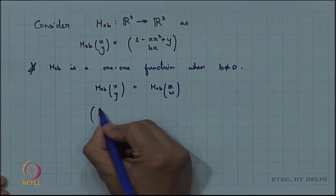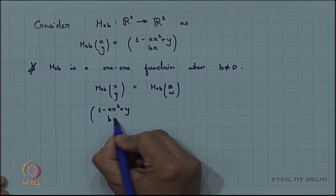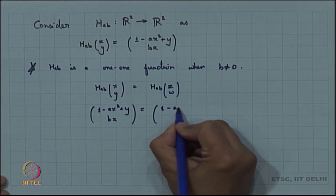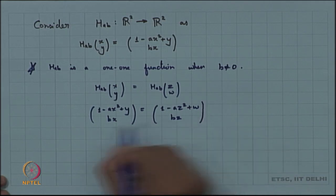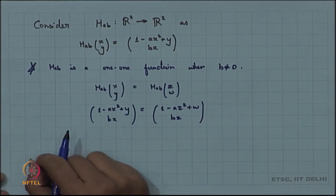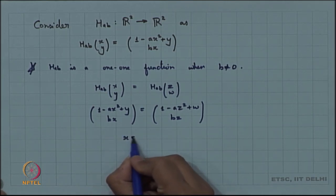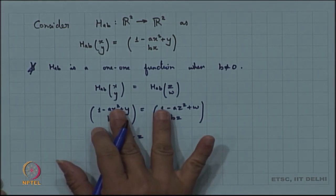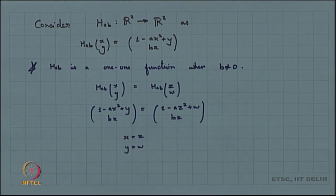To see that H_{a,b} is one-to-one: suppose H_{a,b}(x, y) = H_{a,b}(z, w). Then we have 1 - a·x² + y = 1 - a·z² + w and b·x = b·z. Since b·x = b·z, we conclude x = z, and pushing that into the first equation gives y = w. Hence H_{a,b} is a one-to-one function on R².